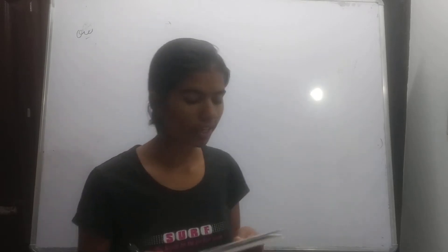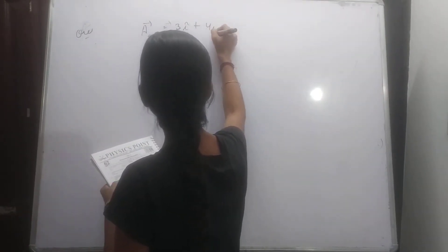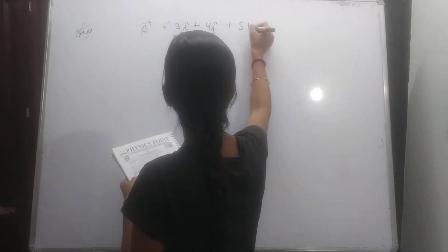Hello student, hamara question hai, the angle between the two vectors. A vector hume de rakha hai, a vector equal to hume de rakha hai, 3i cap, 4j cap, plus 5k cap.